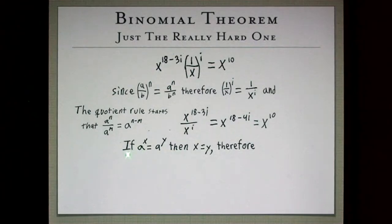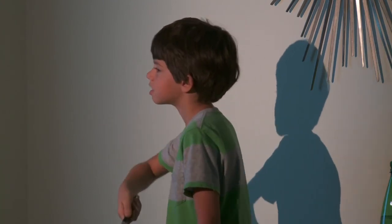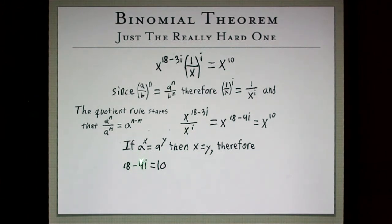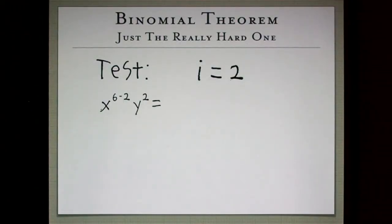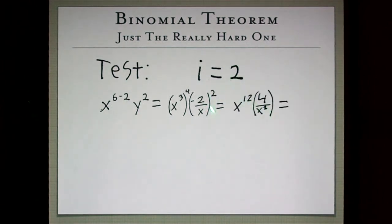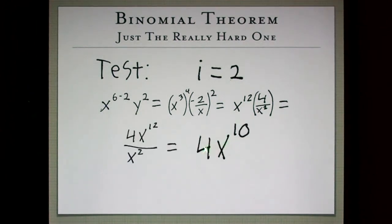Now, using common logic, we can deduce that a to the x equals a to the i. We can drop the bases because they're the same and get x equals i. But there's another proof involving logarithms that I'm not going to explain now. So we get 18 minus 4i equals 10 because we're dropping all the bases. And it's basic algebra from here. Minus 18 on both sides. Negative 4i is negative 8. Divide by negative 4. i equals 2. All right. We're going to test i equals 2. x to the 6 minus 2 because 6 is our n. And minus i, 6 minus 2. y to the 2 or y to the i equals x cubed to the 4th because that's an x, times negative 2 over x squared equals x to the 12th times 4 over x squared equals 4x to the 10th. And so we've proved it. But it's the third term.